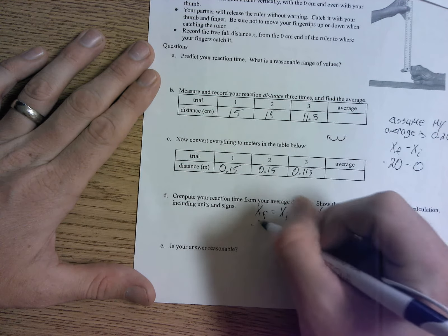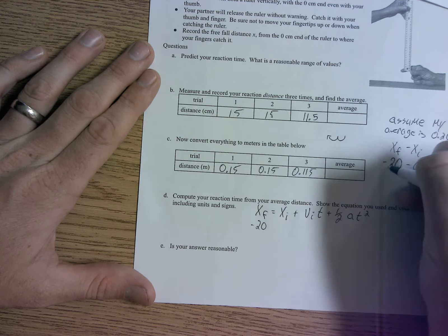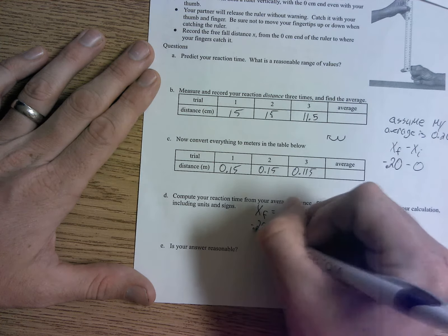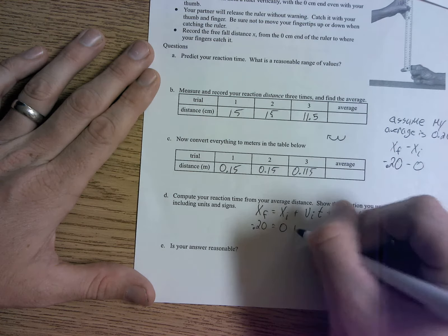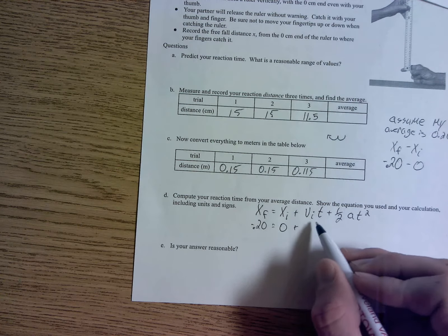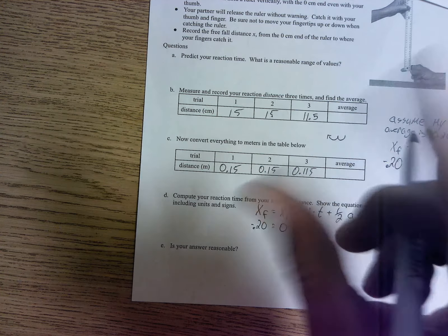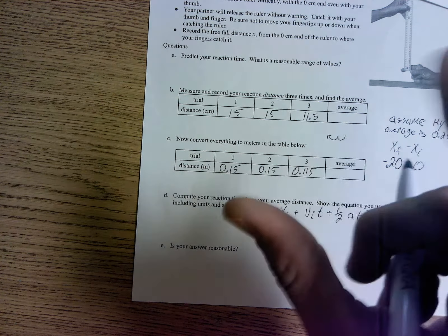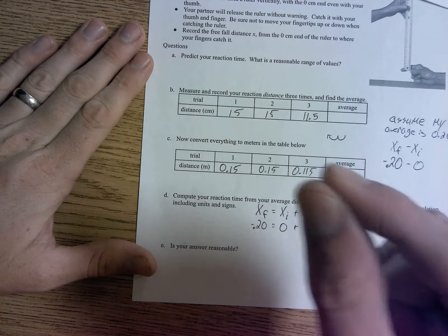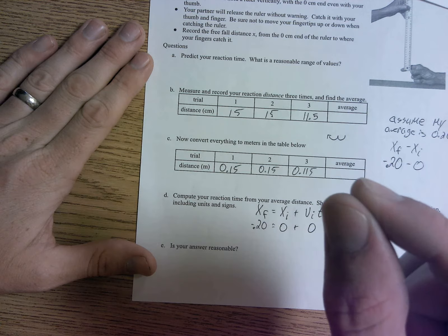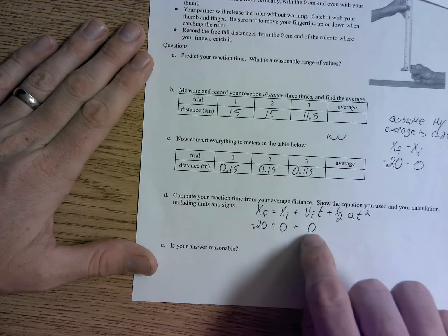So we do know what xf is, we said negative 0.20 in my case. Equals xi was 0. Plus what's our initial velocity? If we dropped the ruler, right? If we dropped the ruler, what's our initial velocity as we let go? Well it should be stopped because we're holding it, right? If it's stopped when we're holding it and we let go, its initial velocity is 0.